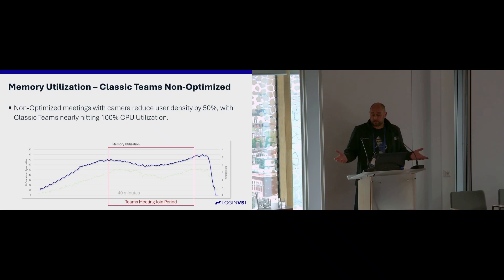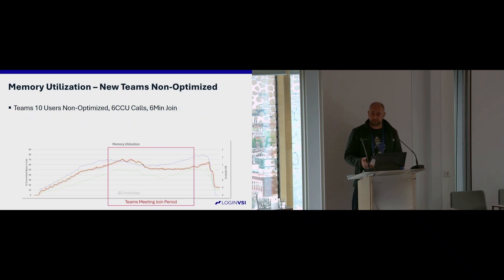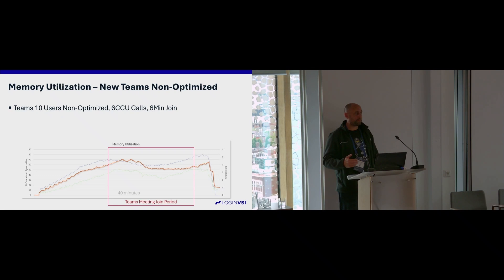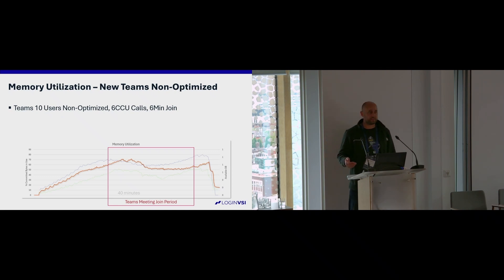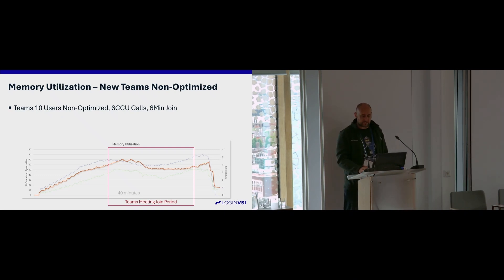On memory utilization when not optimized, it's a bit higher with Classic Teams. With the new Teams client, overall new Teams is lower on memory consumption, and lower on CPU when offloaded and when it just runs normally. But if it's not optimized — red flag. We only get 10 users to the VM when it's not optimized with the new Teams client.